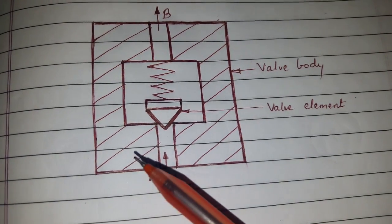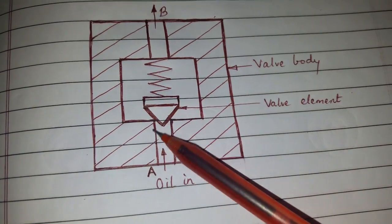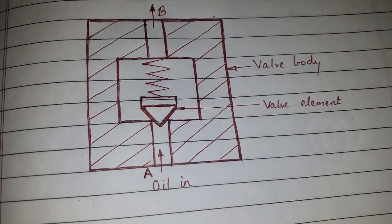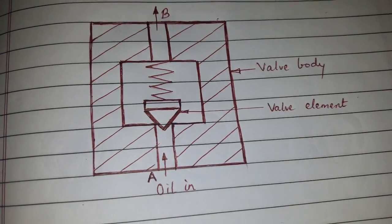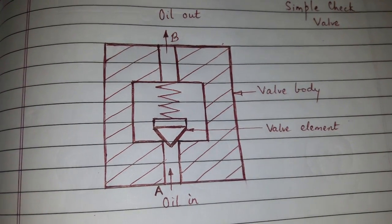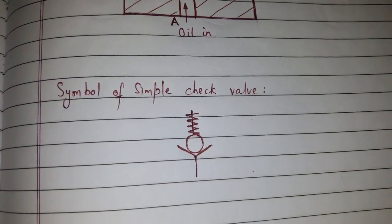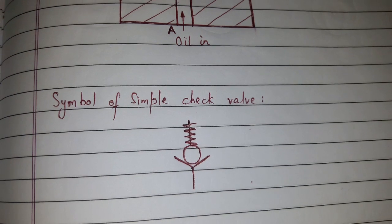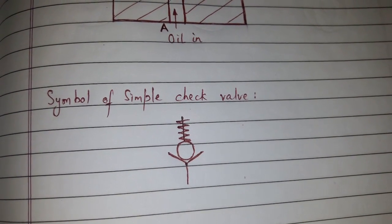Hence no flow is possible from port B to A. Flow in only one direction is possible. The symbol of simple check valve is like this, which is similar to the construction of simple check valve.